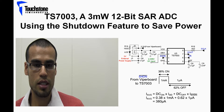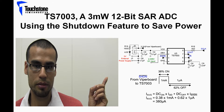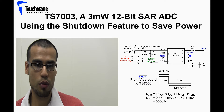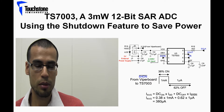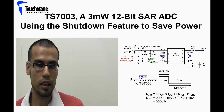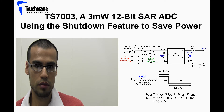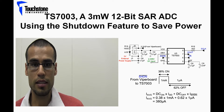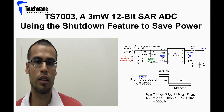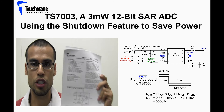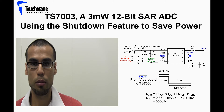To achieve this, I will be using the TS7003 demo board circuit to my left. An external power supply of 3 volts will be applied to the power supply pin highlighted in red, and a DC voltage of approximately 2.5 volts will be applied to the input highlighted in green. The pins highlighted in blue are connected to the Touchstone Viper Board to control the shutdown feature of the ADC. I will use the Touchstone ADC Evaluation Platform GUI. For more information, refer to the Touchstone ADC Evaluation Platform GUI User's Manual, the TS7003 Product Data Sheet, and the TS7003 Demo Board Manual.